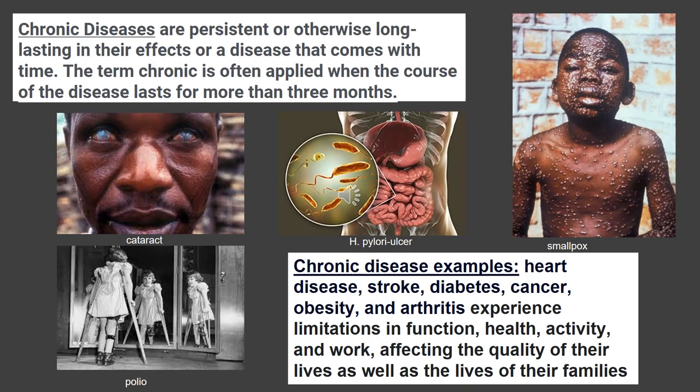Chronic diseases are ones that are persistent and long lasting in their effects, or a disease that comes on slowly over time. That phrase chronic is applied when the course of the disease lasts for more than three months. You can get something like a cold or a sinus infection, and if it lasts longer, it turns into bronchitis or sinusitis, which is more of a chronic disease. Some examples are heart disease, stroke, cancer, obesity, and arthritis — these are accumulative diseases that progress.